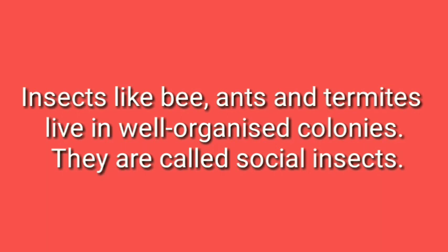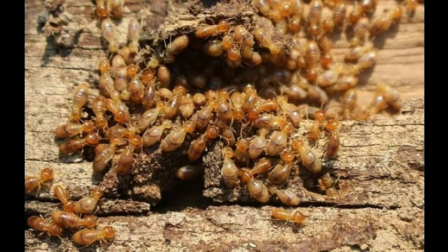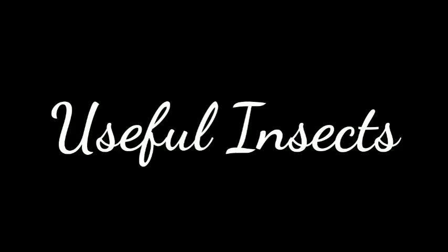Insects like bees, ants and termites live in well-organized colonies. They are that's why called social insects. Similarly, like we human beings stay together and form colonies — we stay in apartments or in a society, we interact and help each other, that's why we are social animals. In the same way, bees are also very social and helpful towards each other. That's why they are called social animals. Now let us move on to some of the useful insects around us.